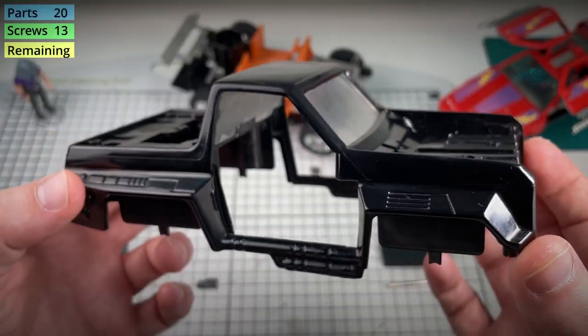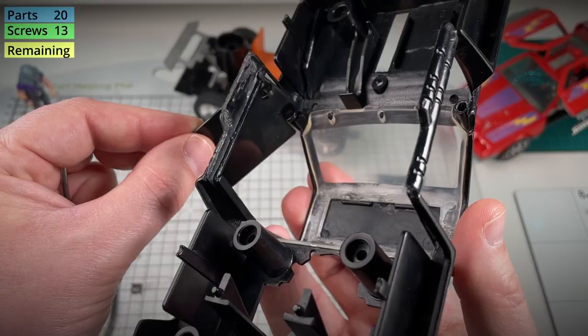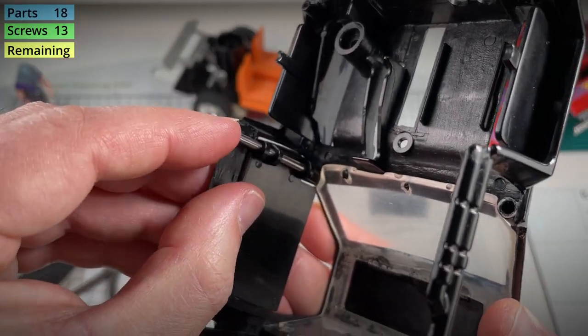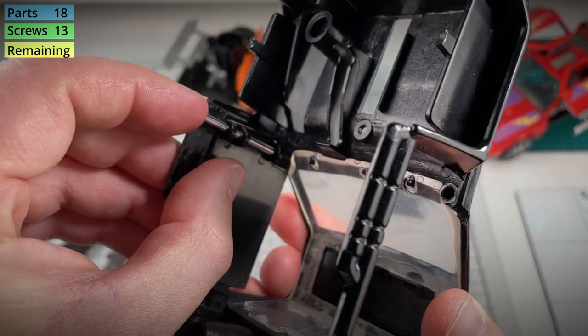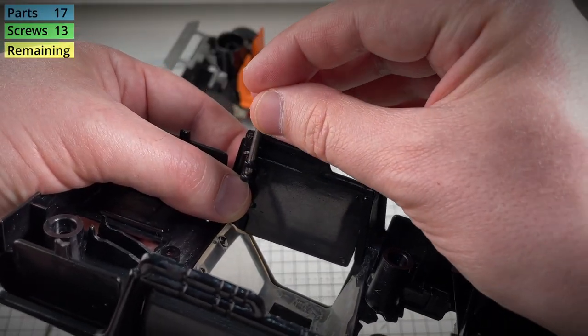Let's focus on the body now. First we'll fit those doors. They need to go this way around. Adding the door first. Then sliding in that door hinge. It's a little fiddly. That will engage eventually. There we go. Same on the other side.